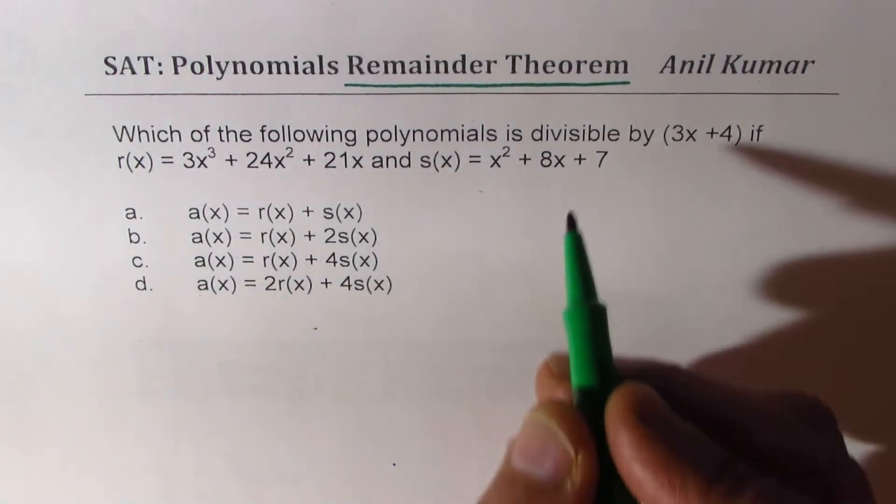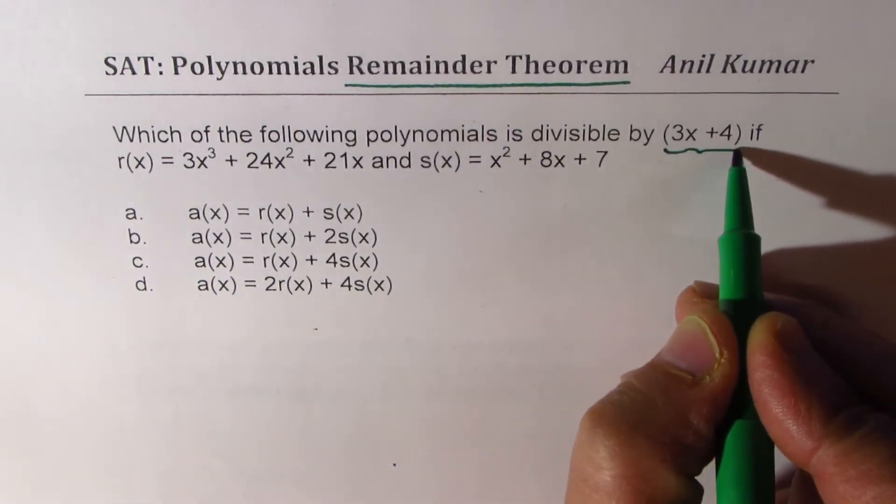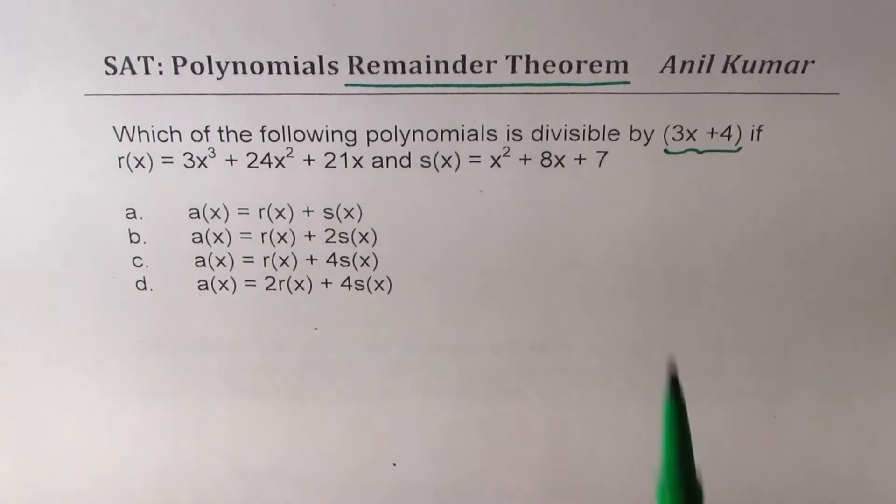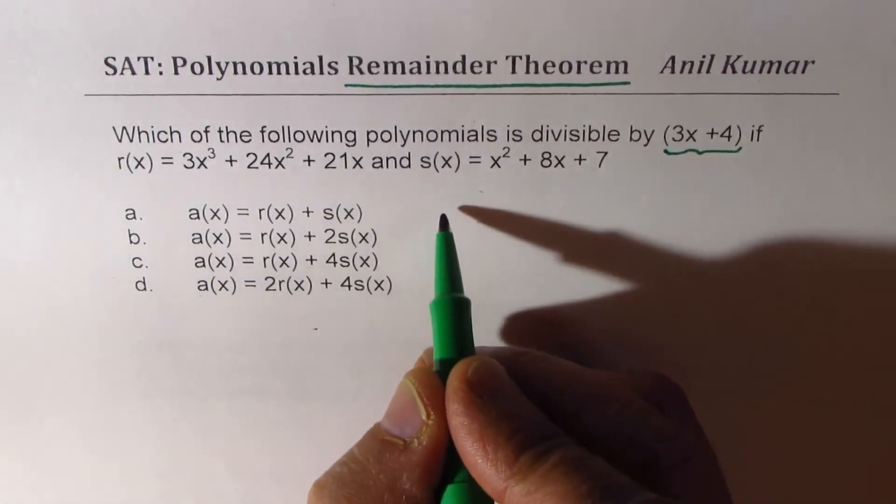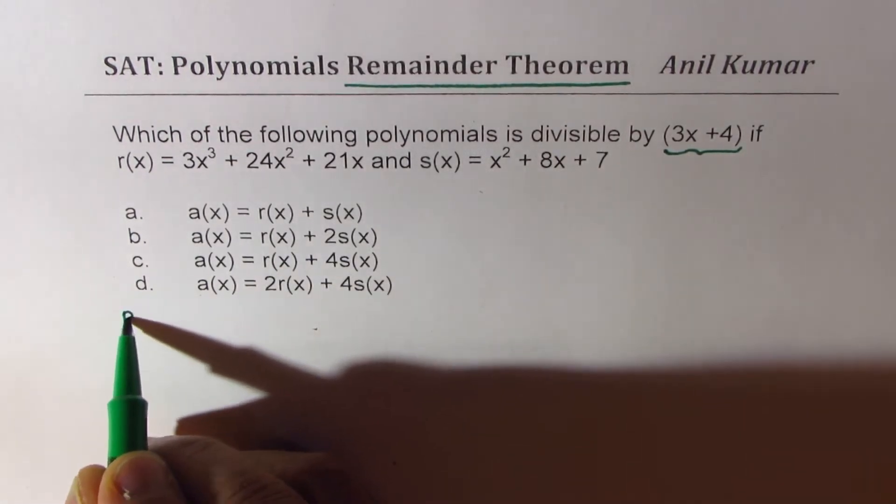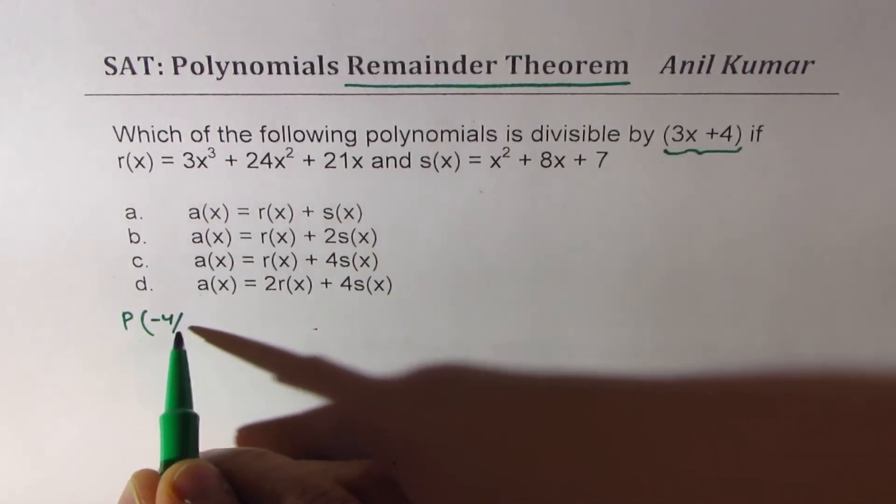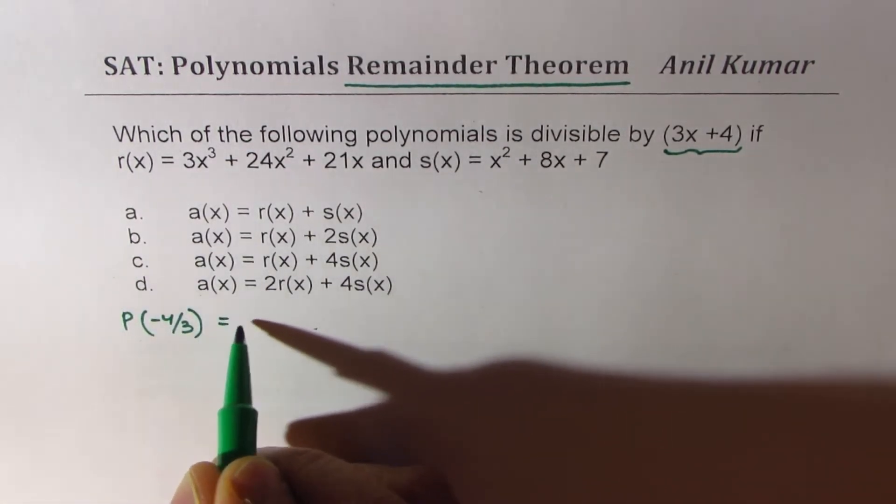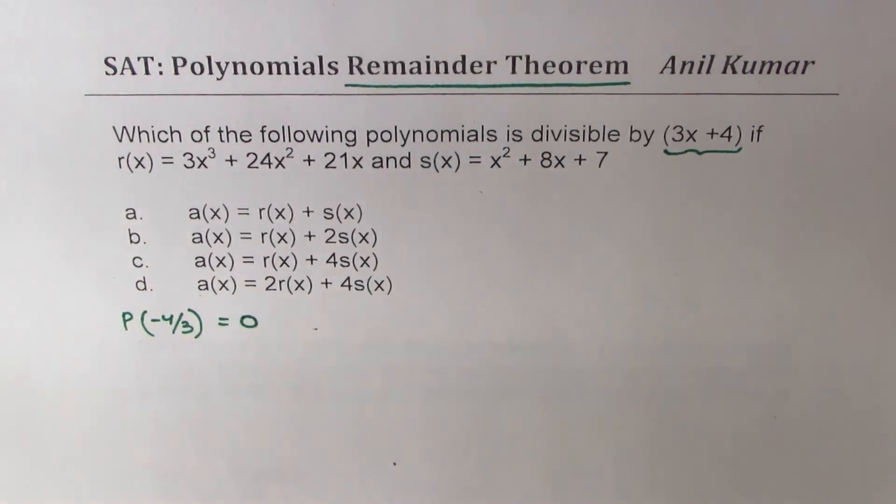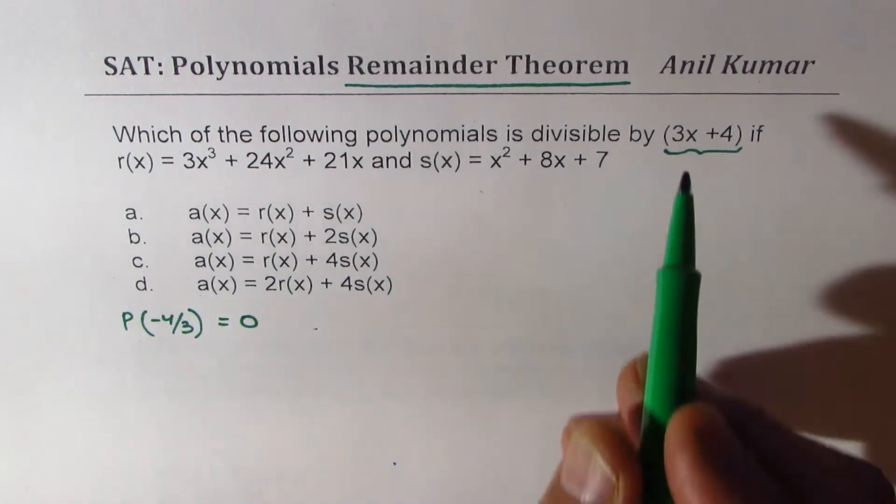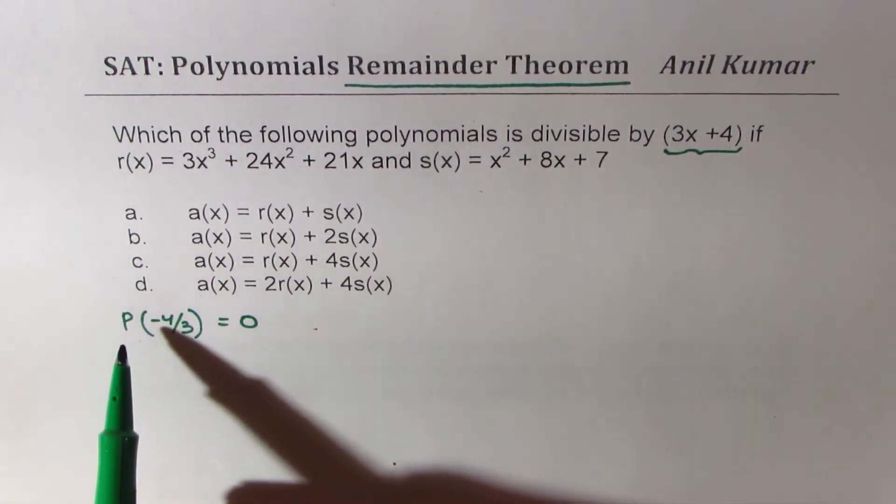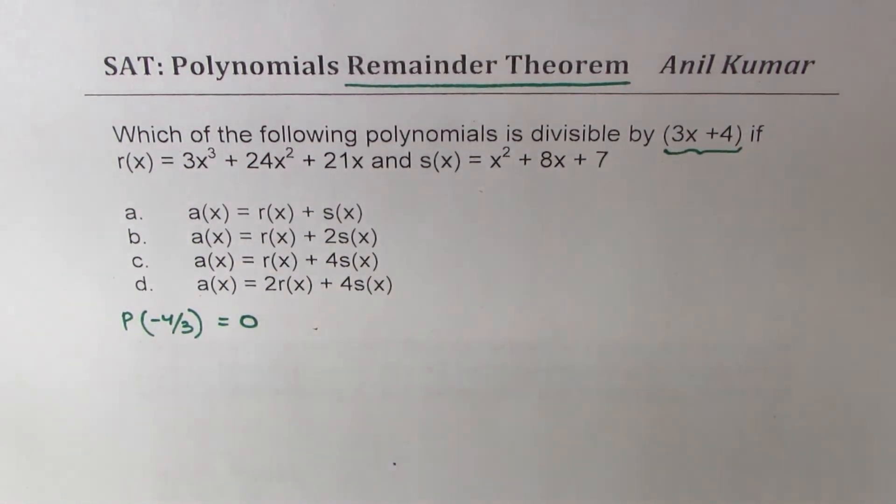We are dividing by 3x plus 4. That means we are looking for the value of a polynomial at x equals minus 4 over 3, and if that equals 0 then we say it is divisible, or we can say 3x plus 4 is a factor. So that is what we are trying to figure out.